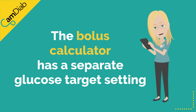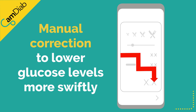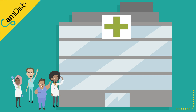The bolus calculator has a separate glucose target setting. This target is only used when someone asks for a manual correction to be given via the bolus calculator to lower high glucose levels more swiftly. Please program both these glucose target settings with the support of your diabetes team.